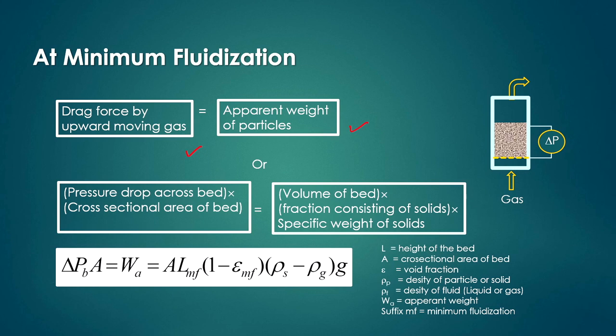If we know the frictional pressure drop from a measured value, and multiply it by the cross-sectional area of the bed, we get the total drag force given by the upward moving gas. So we can write: drag force by upward moving gas = pressure drop across bed × cross-sectional area of the bed = apparent weight of the particles.